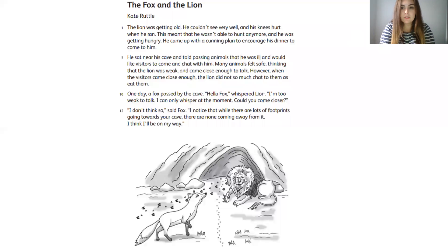Hi Year 2, welcome to your second Reading Comprehension lesson this week. Remember this week we're looking at fiction texts, so these are texts that are stories, they're not true. Our fiction text today is called The Fox and the Lion by Kate Ruttle.